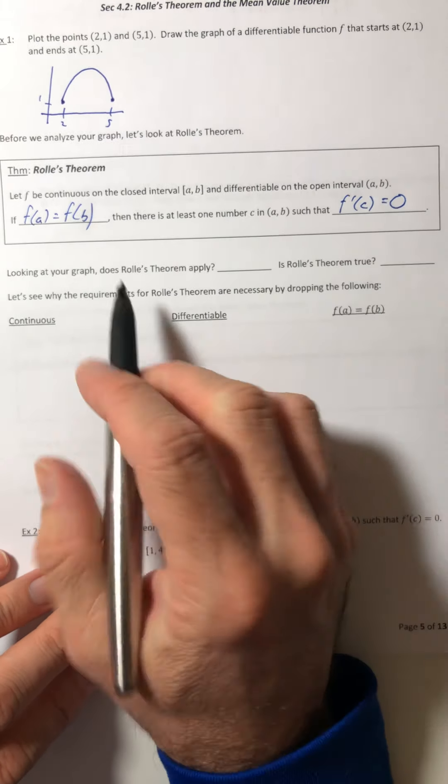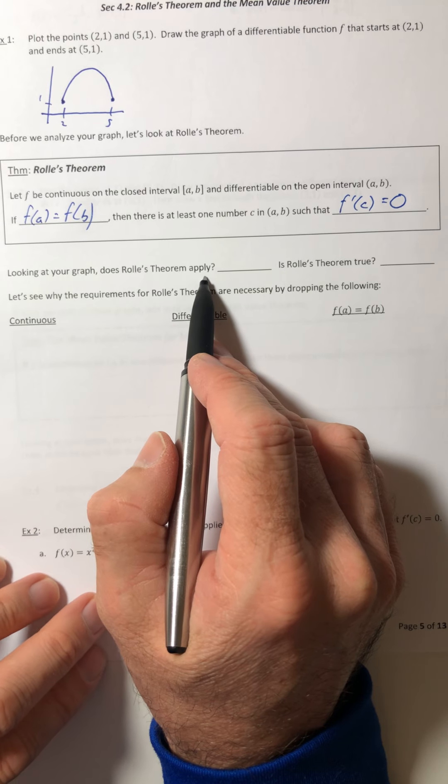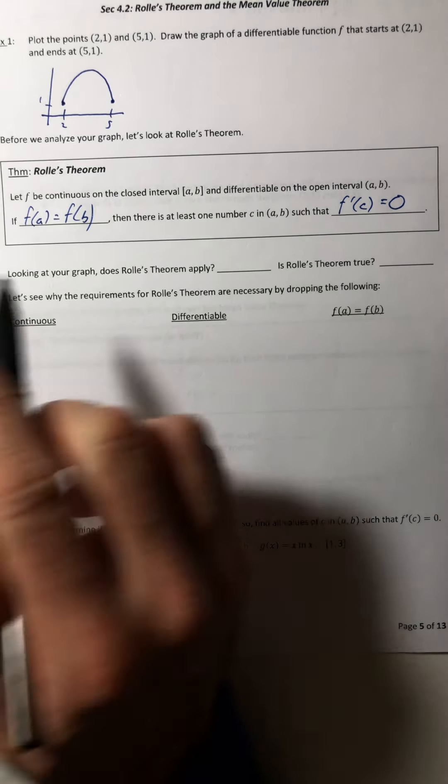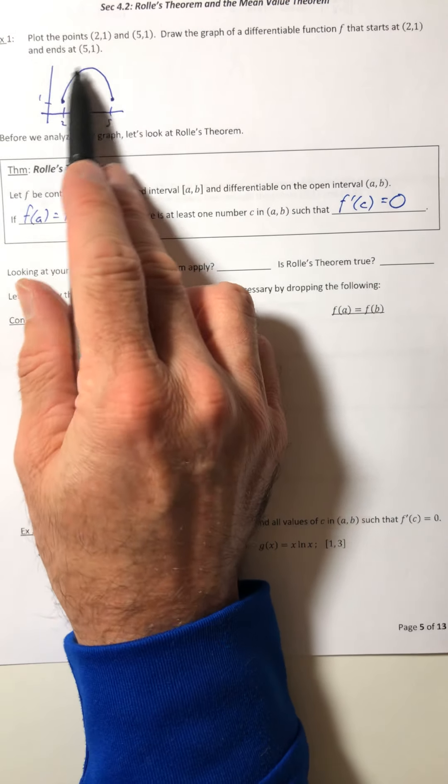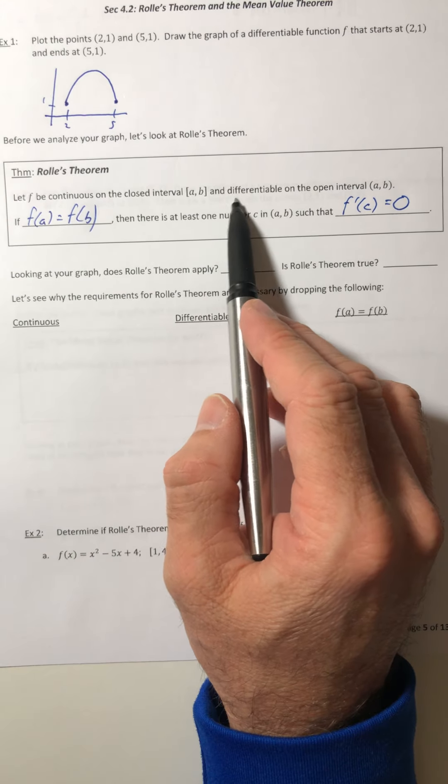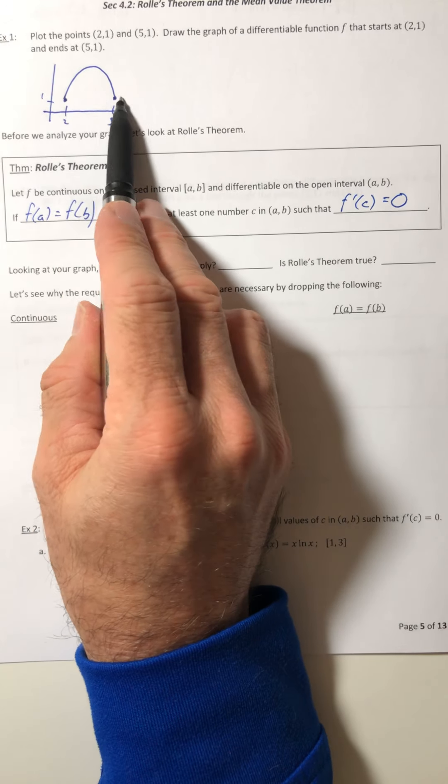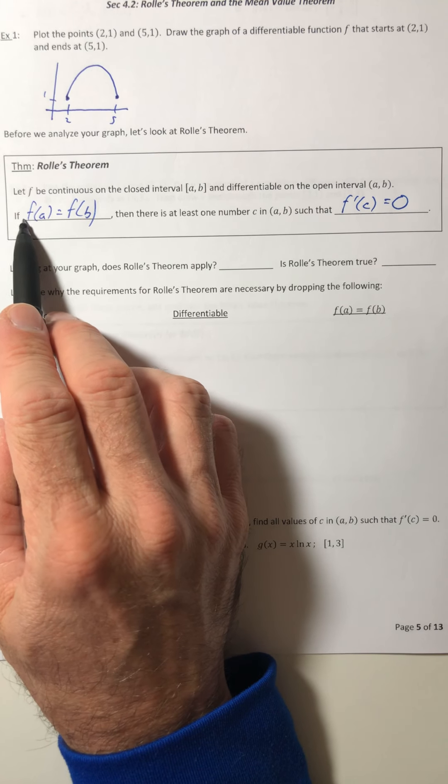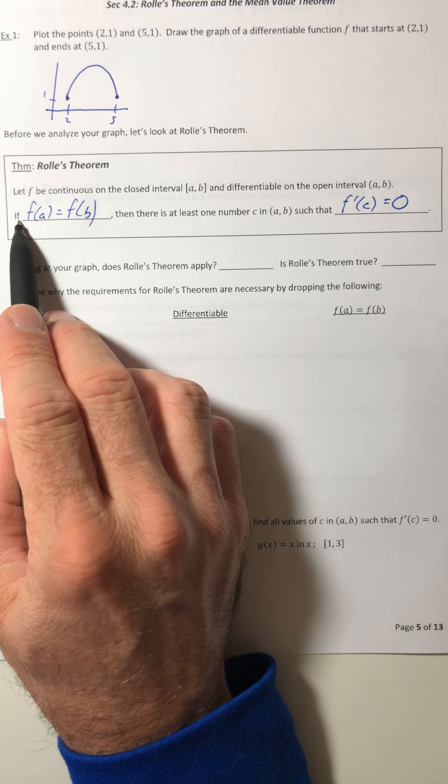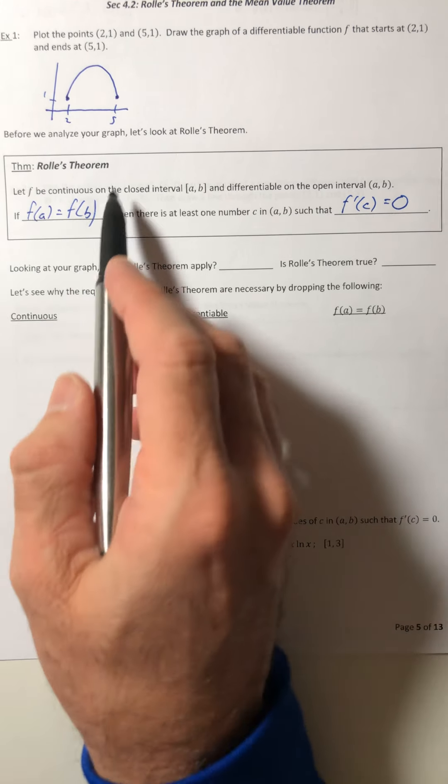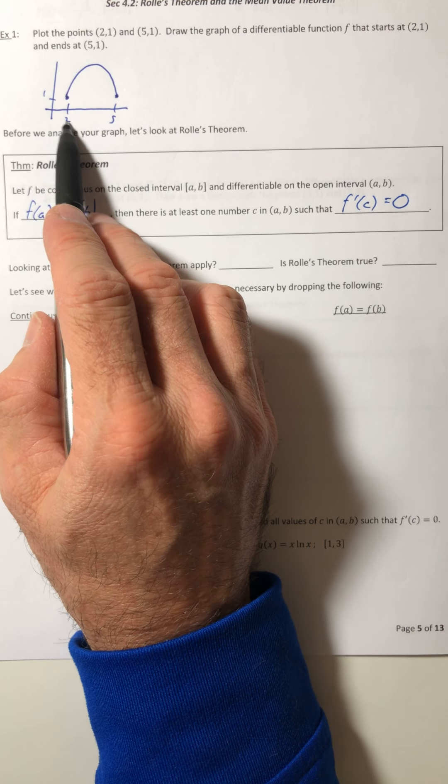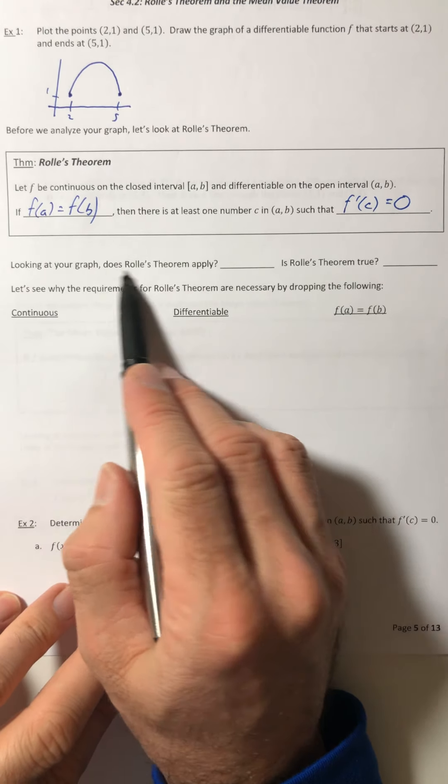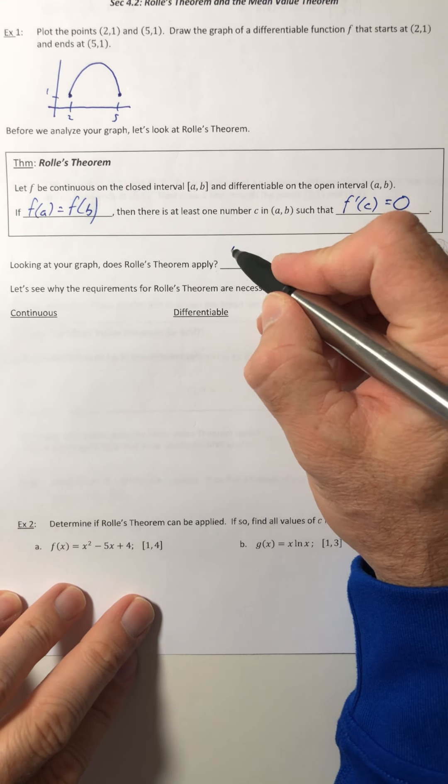Okay, so looking at our graph, does this theorem actually apply? Well, let's see if it does. This graph that we drew, is it continuous and differentiable from start to finish? Yes. Does this happen? f(a) equals f(b). So in other words, does f(2) equal f(5)? Yeah. They have the same y value. So when it says, does it apply? Yes, it does.